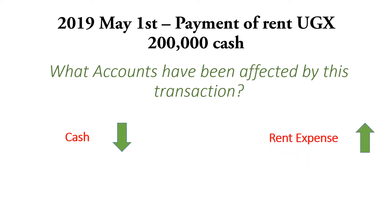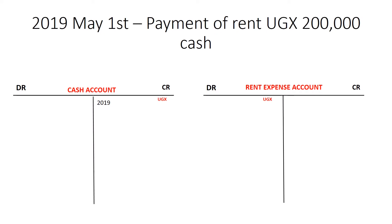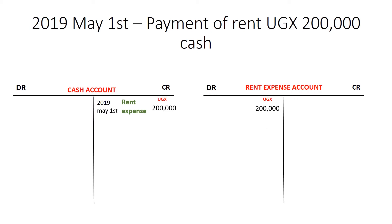The double entry associated with that is that decreases in cash are credited, according to our double entry rules. So we shall credit cash with 200,000. The other account that has been affected is rent, and this happened on the 1st of May 2019. We complete our double entry by debiting the rent expense account with 200,000. The other account affected is cash, and all this happened on May 1st, 2019.